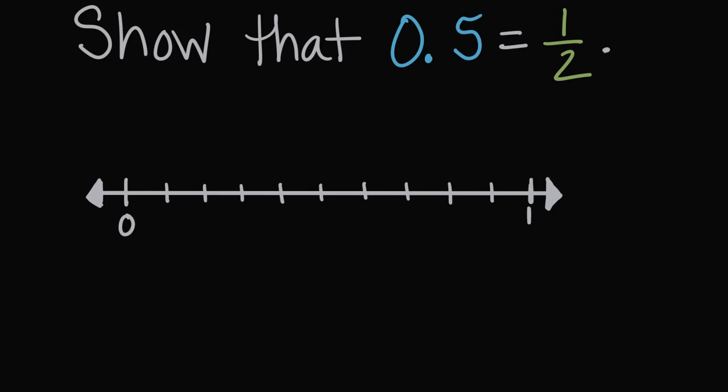We have a number line that goes from zero to one, and it's divided into one, two, three, four, five, six, seven, eight, nine, ten equal pieces.